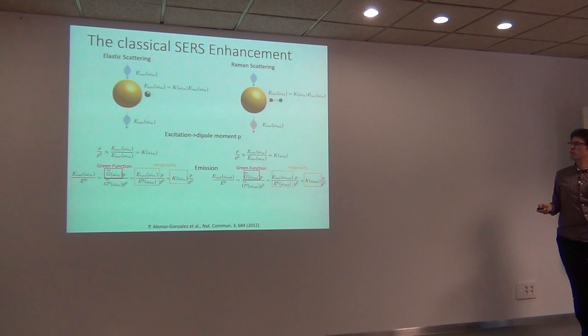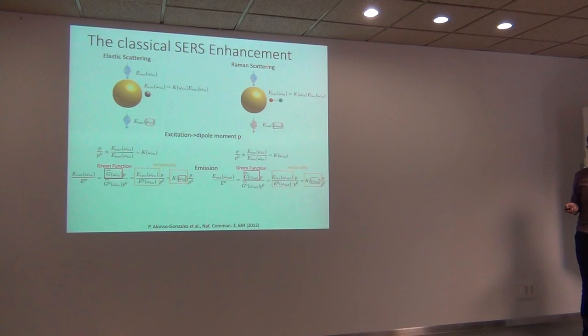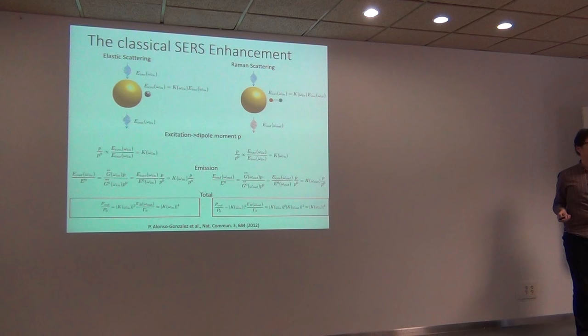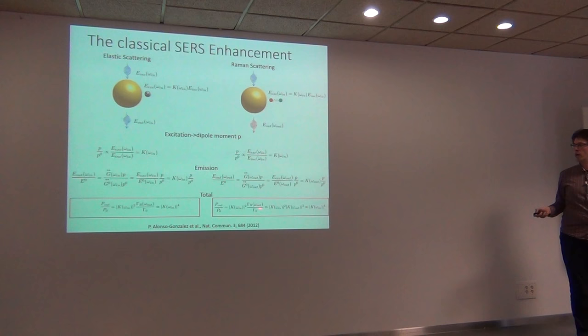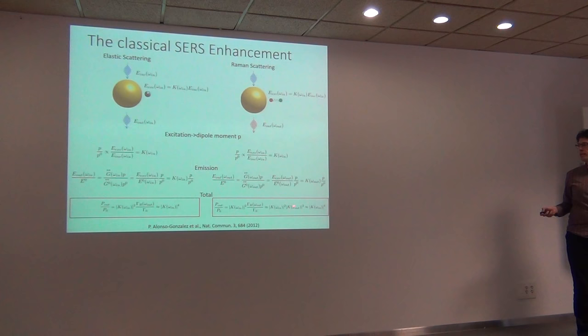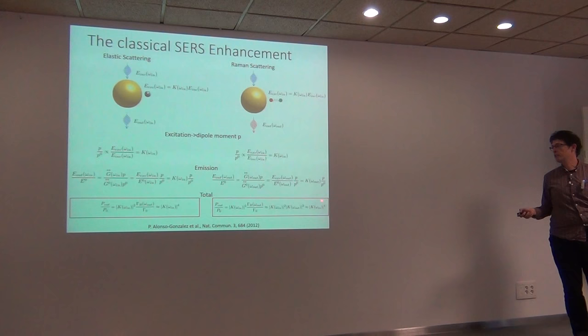I want to emphasize that I'm not making a distinction between Raman and elastic scattering here, because the only difference in this formalism is that Raman scattering emits at a different frequency than the incoming one. Otherwise, elastic scattering also goes with the fourth power of the field enhancement. Measuring power means taking the square. This square of the Green's function is usually written in terms of decay rates, and we see two mechanisms of enhancement: one enhancing the dipole moment at the input frequency, and one enhancing the emission — both linked to field enhancement, giving the fourth power.